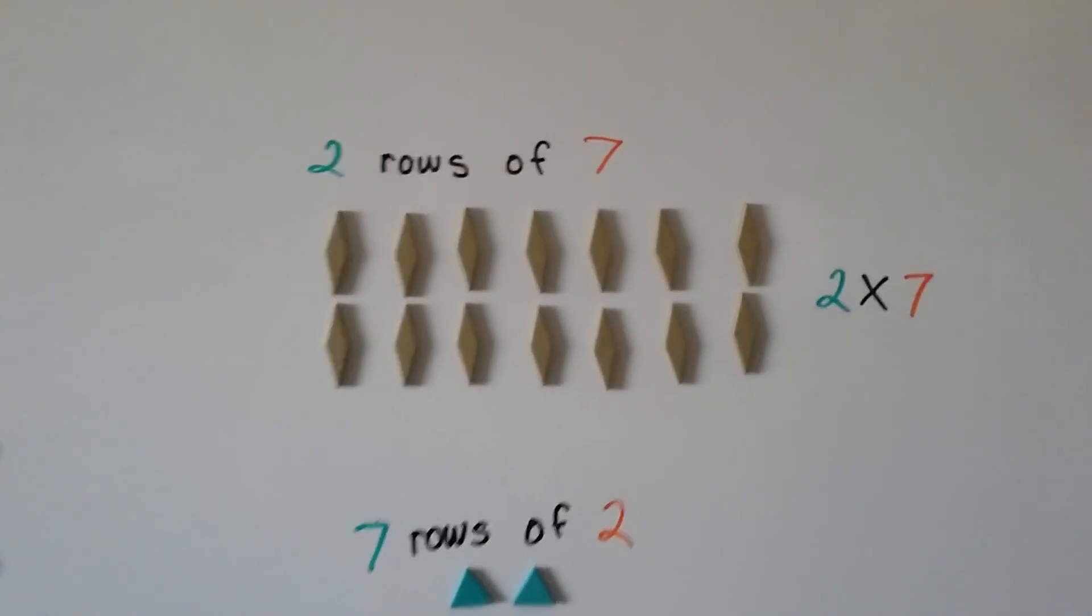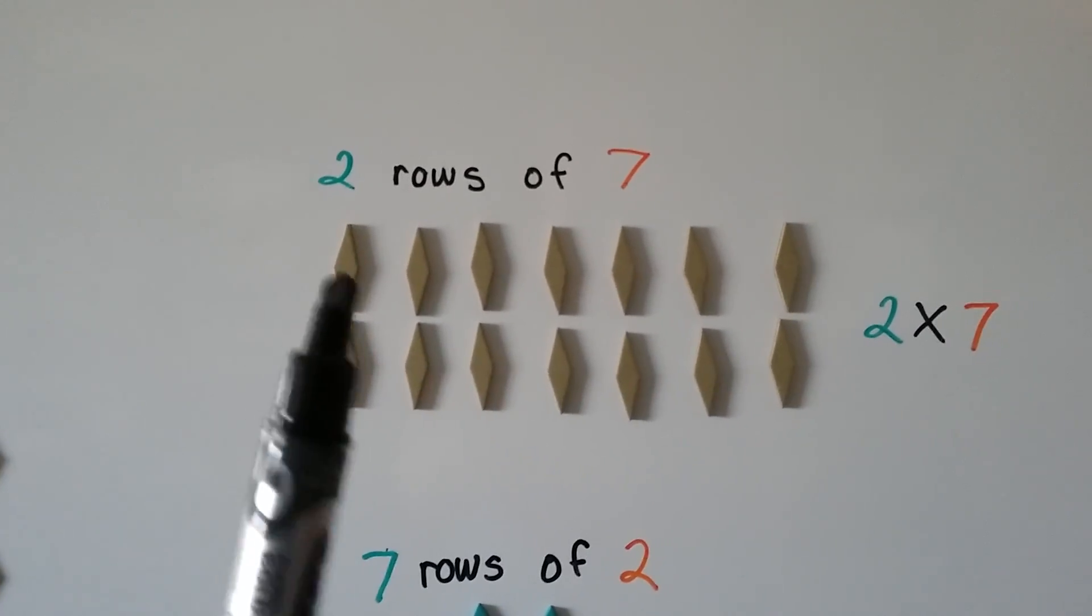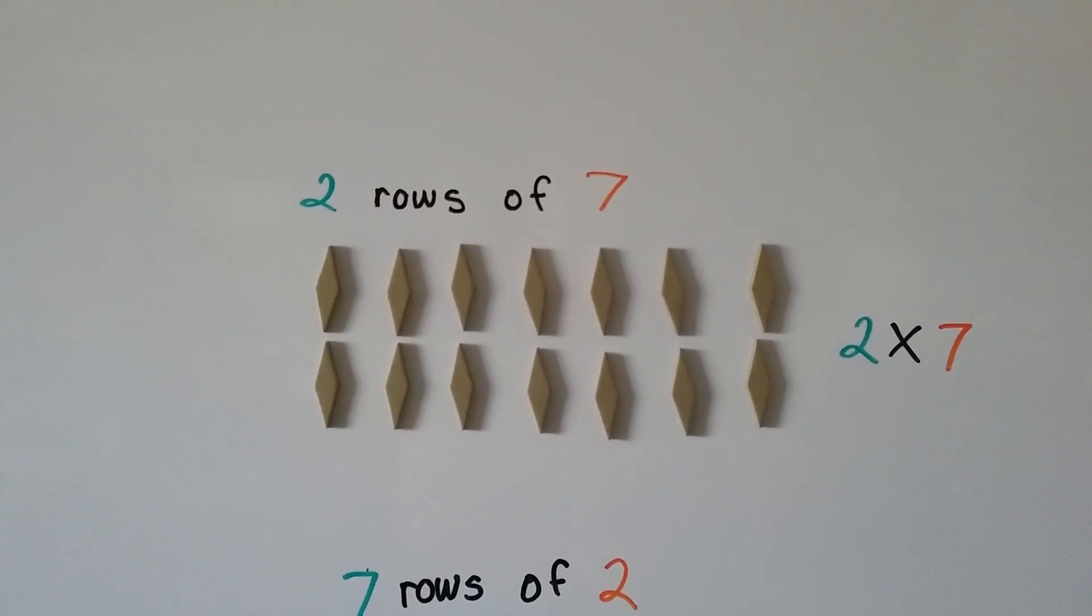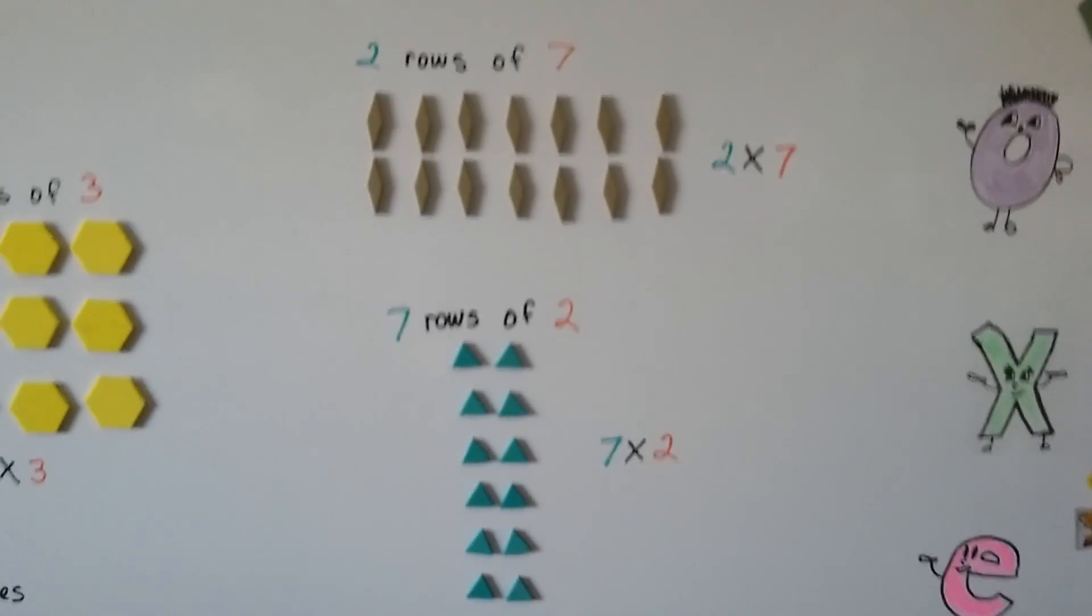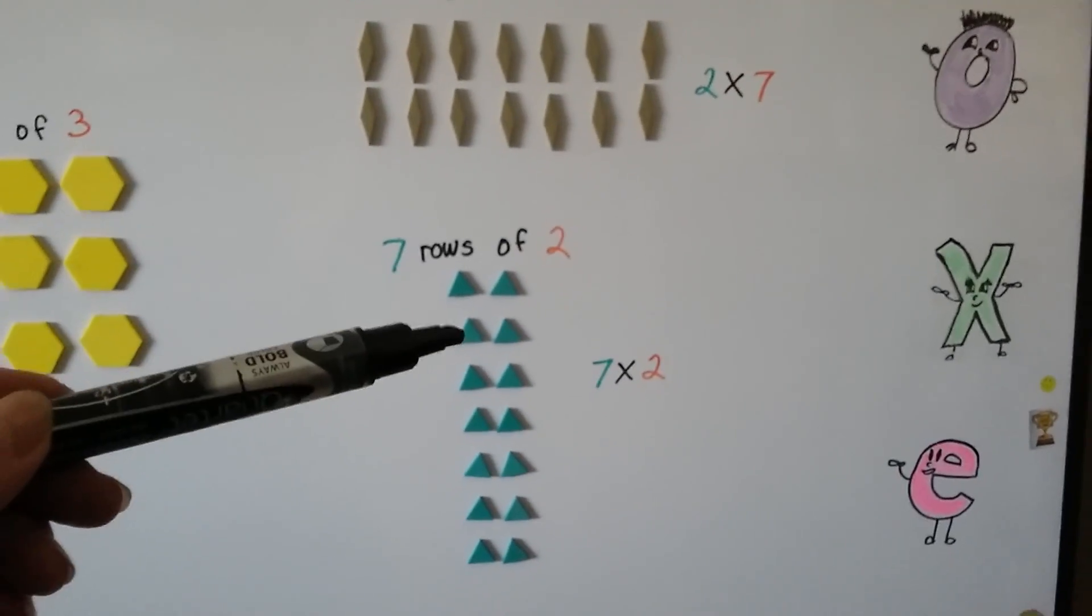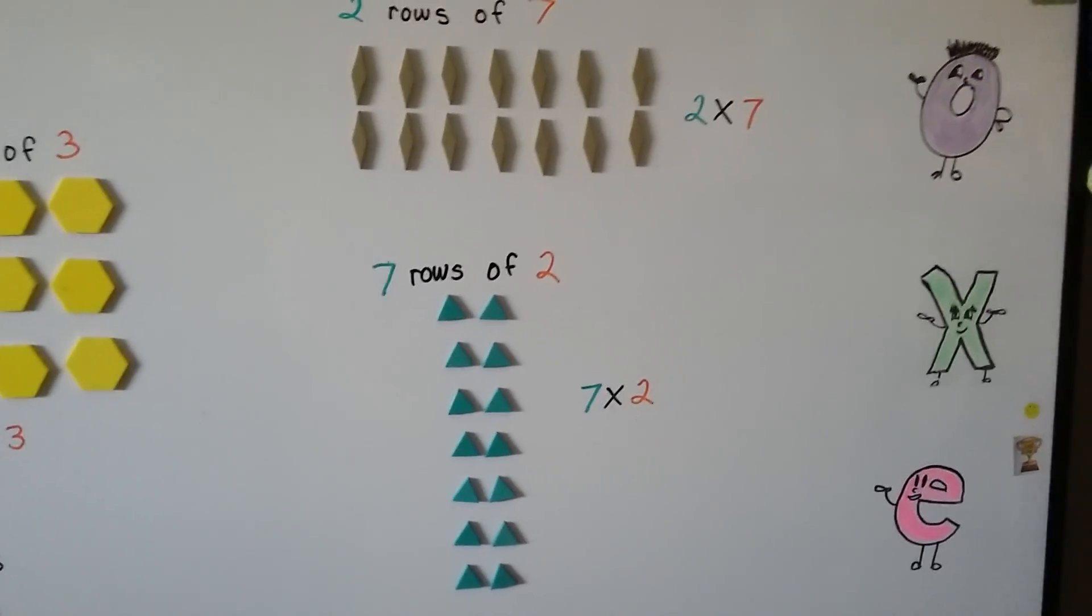Here we have 2 rows of 7. 2 rows and 7 columns. 2 times 7. And here's 7 rows of 2. We have 7 coming down and 2 columns. 7 times 2.